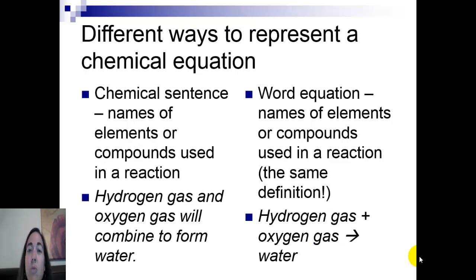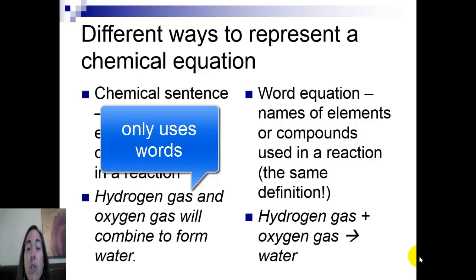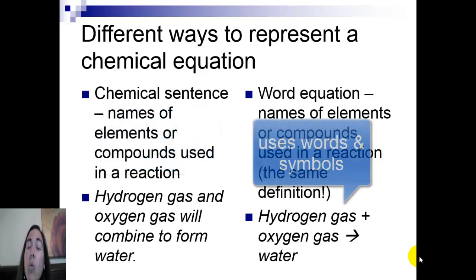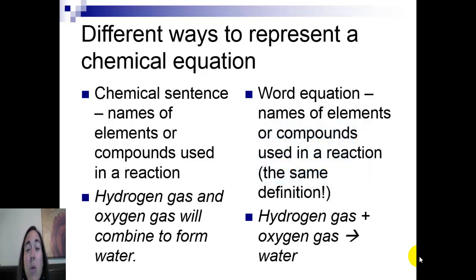There are a couple different ways to write a chemical equation. You can write a chemical sentence, which gives you the names of the elements or the compounds that are used, or you can write a word equation. If you look at that definition, it's the exact same thing. Take a look at the examples at the bottom of this slide and I think you'll see the difference. A chemical sentence only uses words to describe the process that's happening in the reaction, while a word equation combines words and the symbols that belong in the equation.